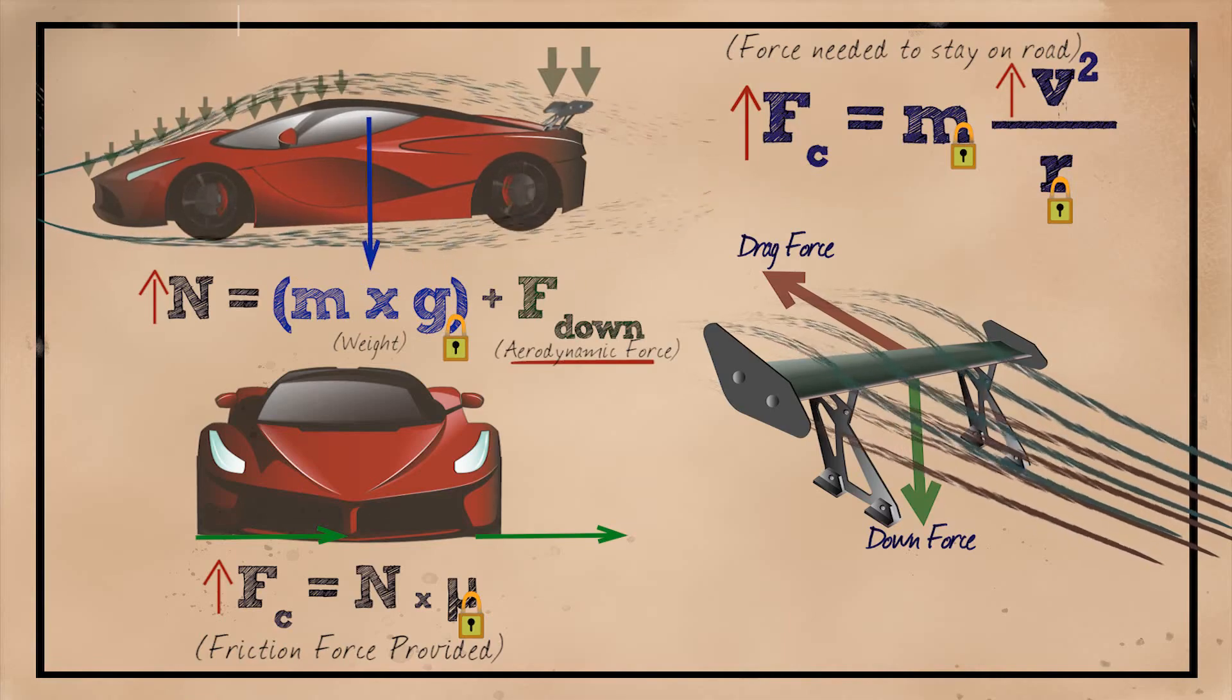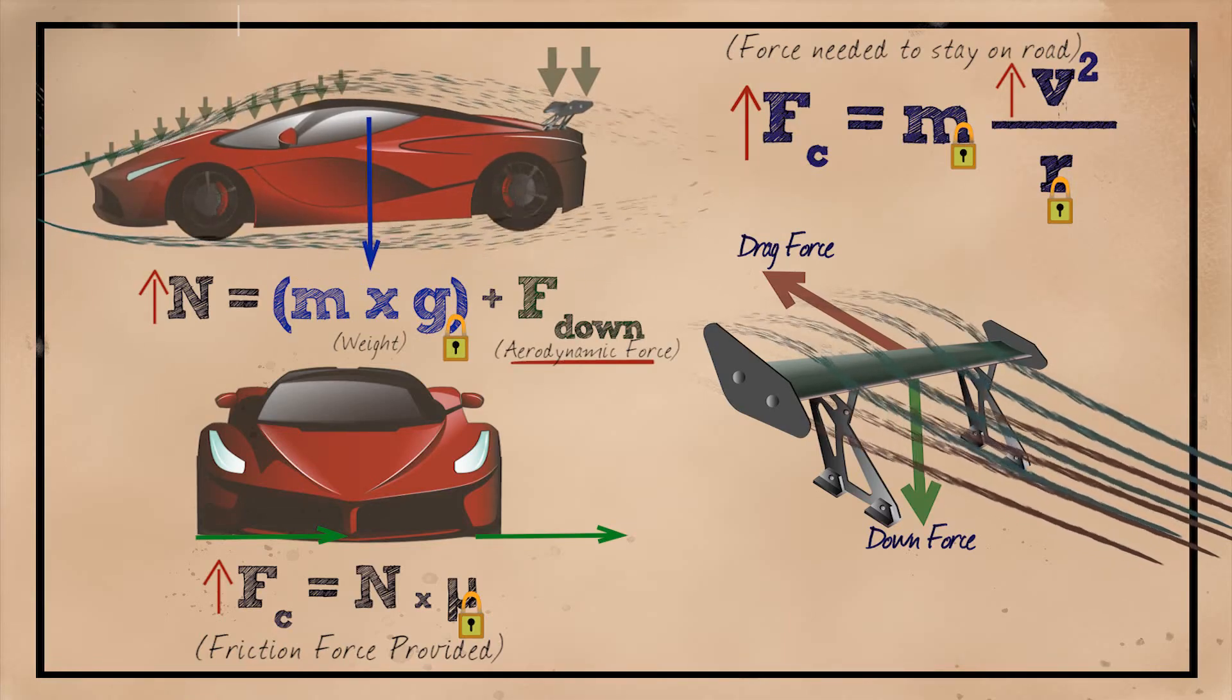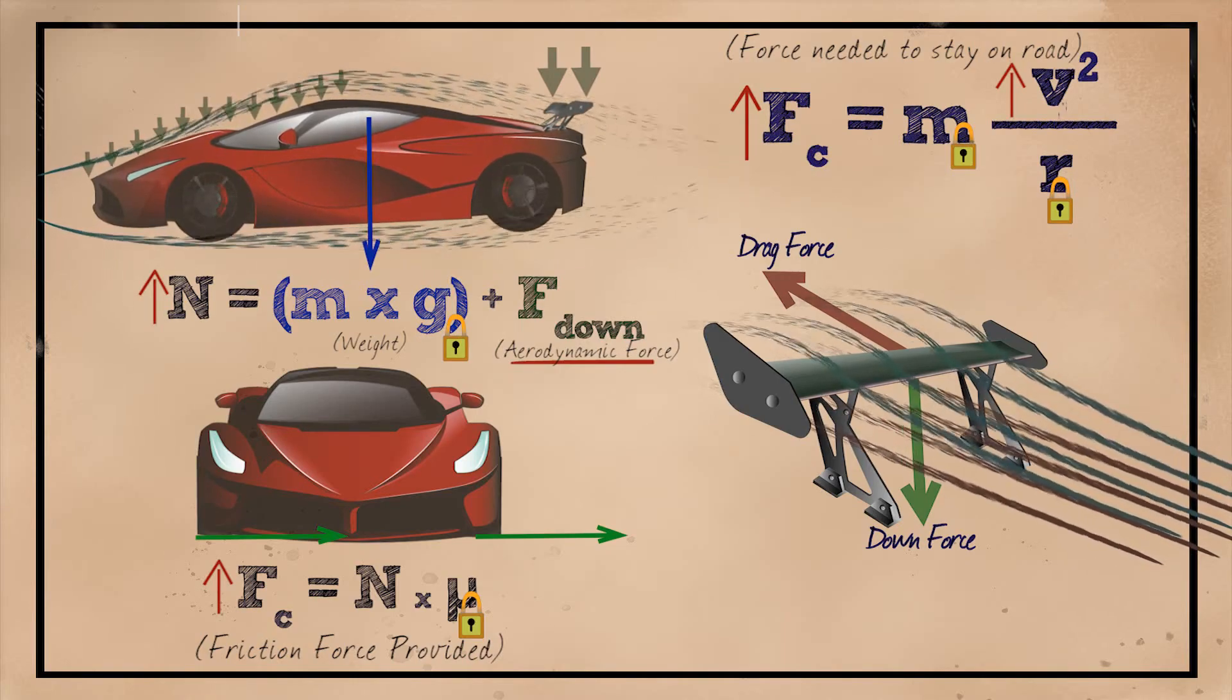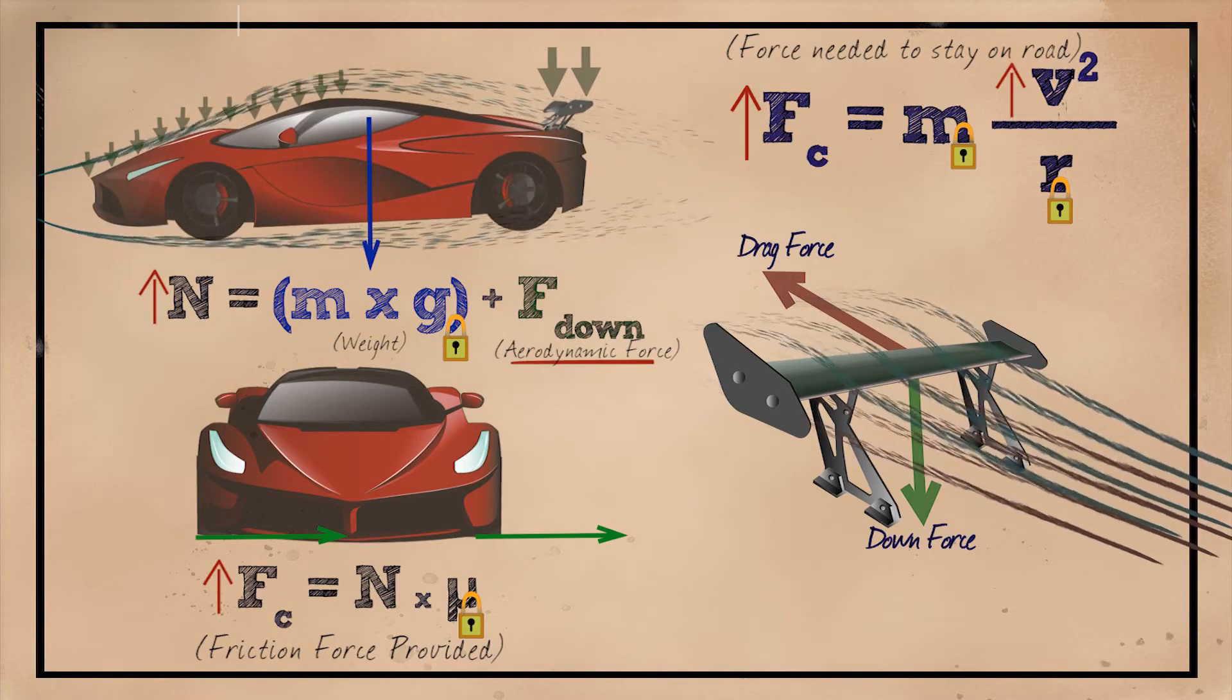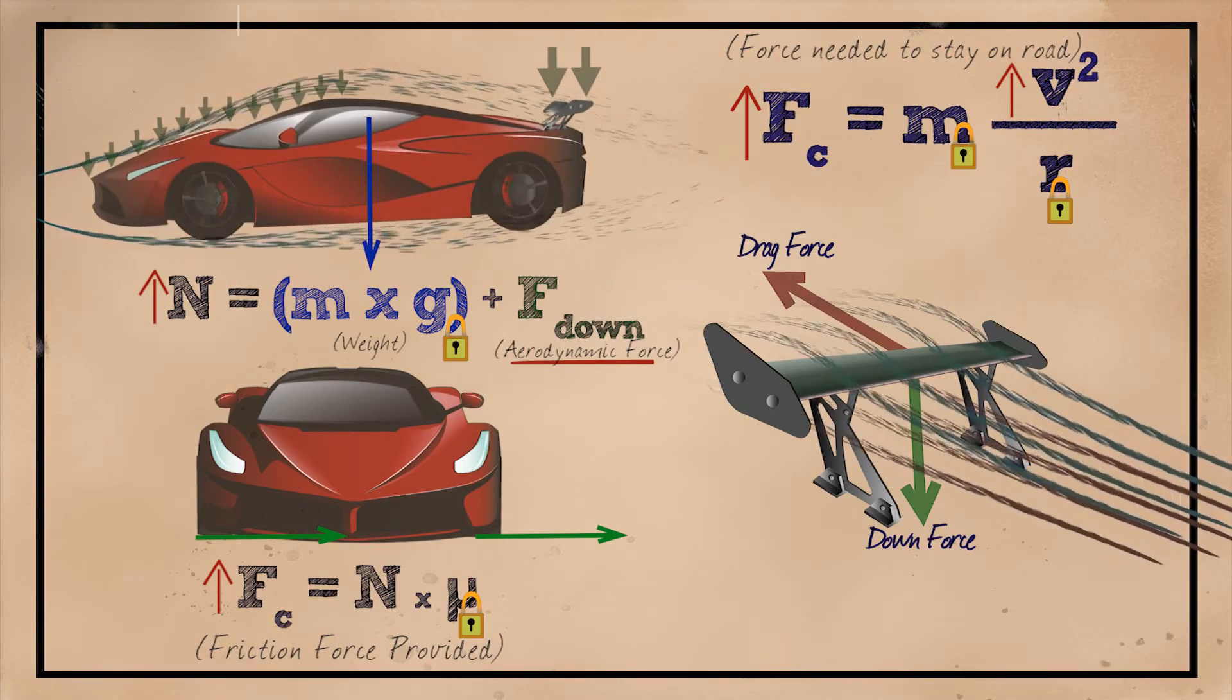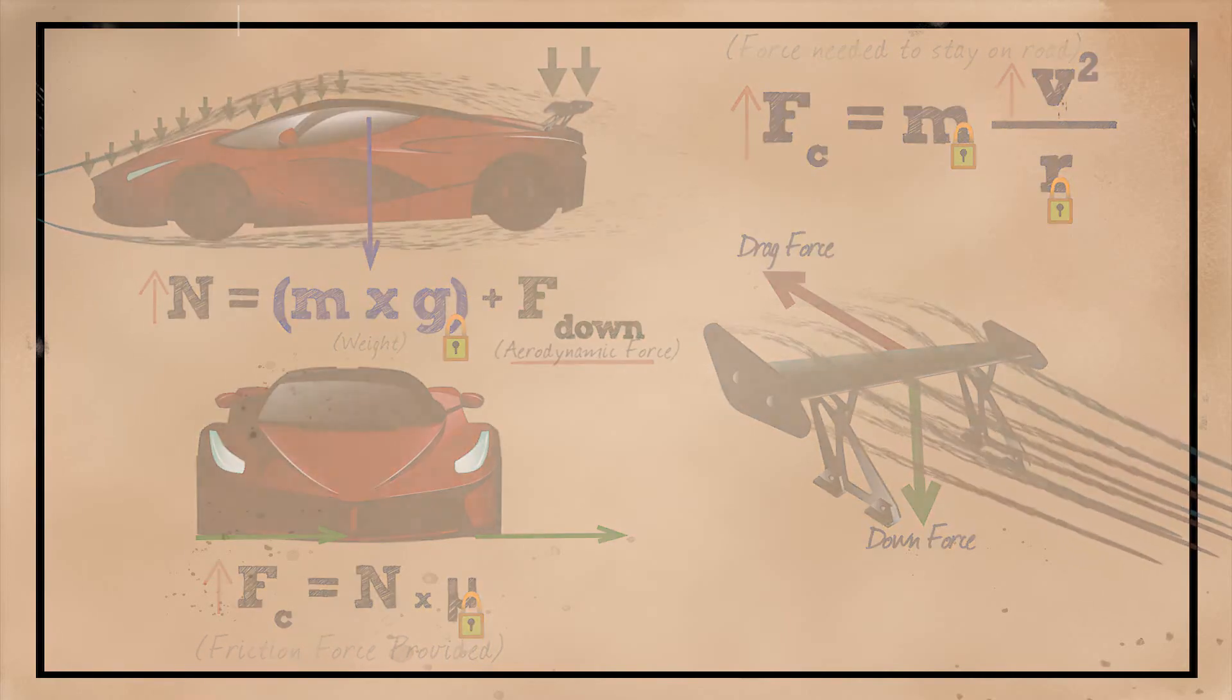But how much difference does the wing actually make? The answer is not simple. It's highly dependent on parameters such as the mass of the vehicle, the friction coefficient, radius and superelevation of the curve, but also the shape of the wing and angle of attack and so on. But for regular, non-racing cars, the wing doesn't make a huge difference.